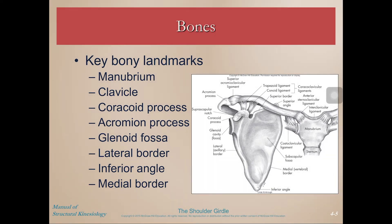Some key bony landmarks that you should be able to identify — I'll show you on screen and then on myself as best I can. The manubrium is right here at the top of your sternum. Then the clavicle — if you follow the manubrium laterally and trace that bony ridge at the top of your chest, that would be your clavicle. The coracoid process is just inferior to that, and you can feel it on the anterior aspect of your shoulder. The acromion process is the most lateral bony aspect at the superior aspect of your shoulder. The glenoid fossa we obviously can't palpate, but that's important to know because that's where your humerus articulates.